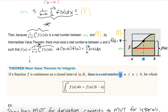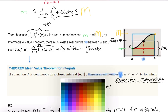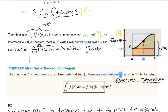What's the geometric interpretation? The definite integral from A to B of f of x dx is the area under the curve, which is the area already shaded here. So in words, it's the area under f on our closed interval.